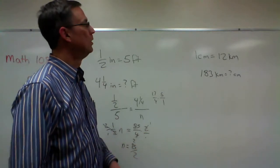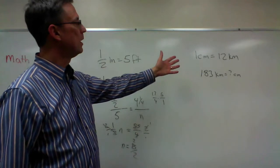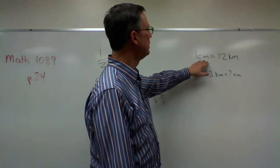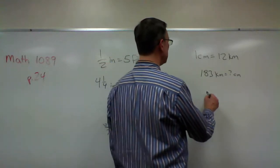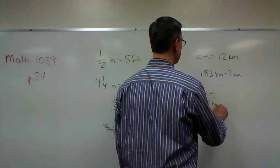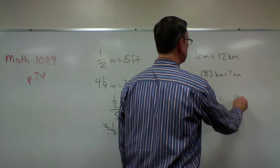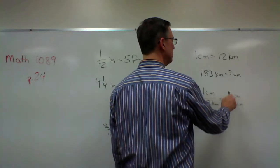So you actually get a fraction or decimal for the answer. And let's talk about this one further down on the page: 1 centimeter equals 12 kilometers. So again, let's set it up as centimeters is to kilometers as centimeters is to kilometers. Now which one don't I know? I don't know centimeters.